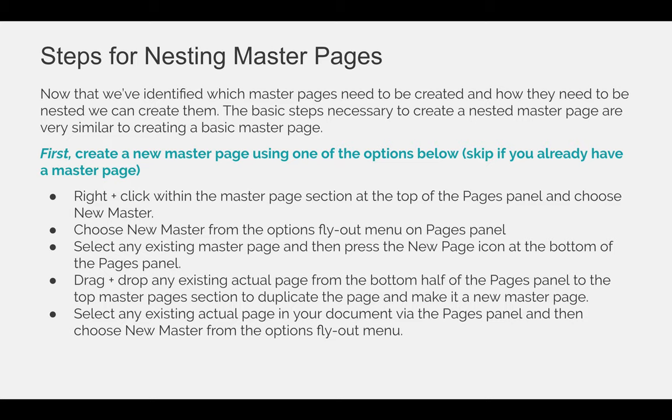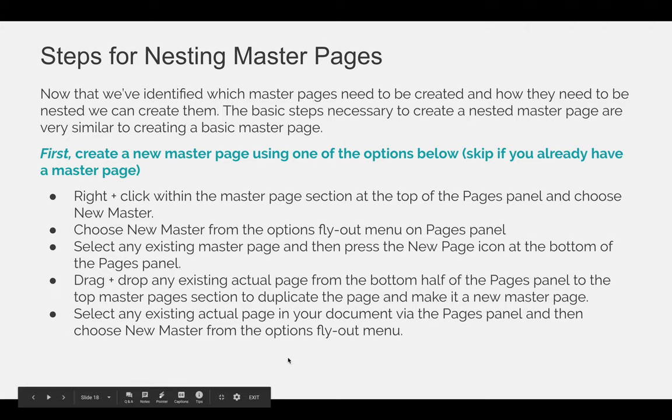If you need a little review, you can create new Master Pages in a number of ways. You can right-click within the Master Page section — the top half of the Pages panel — and choose New Master. You can choose New Master from the Options flyout menu on the Pages panel. You can select any existing Master Page and press the New Page icon in the bottom right-hand corner of the Pages panel. You can drag and drop any existing page from the bottom half of the Pages panel onto the top half where the Master Pages are, and it will duplicate it and create a Master Page from it. Or you can select any existing page and via the Pages panel flyout menu choose New Master Page.